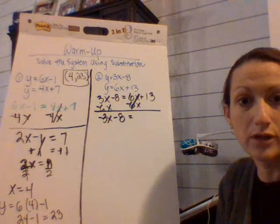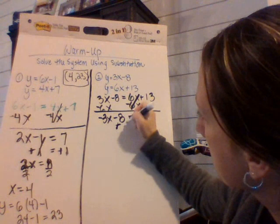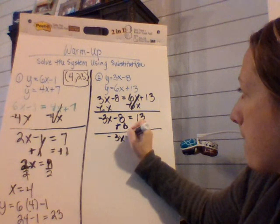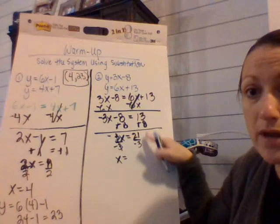Now because my x is on the left, I have to move the 8. It's a negative 8, so we're going to add 8. 13 and a positive 8 is 21. Divide both sides by a negative 3. And x is equal to a positive 21 and a negative 3 is a negative 7.